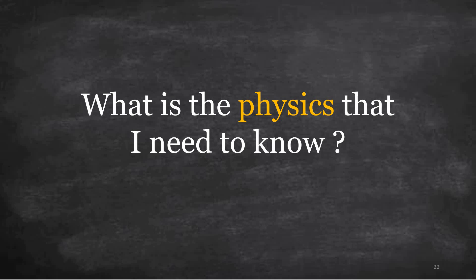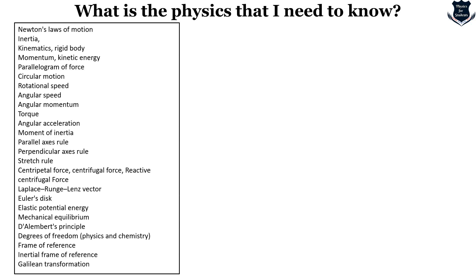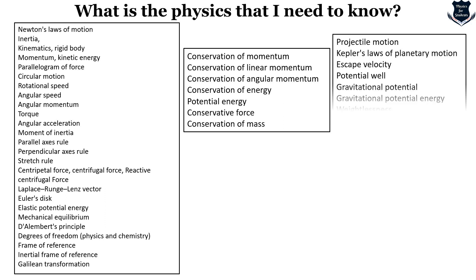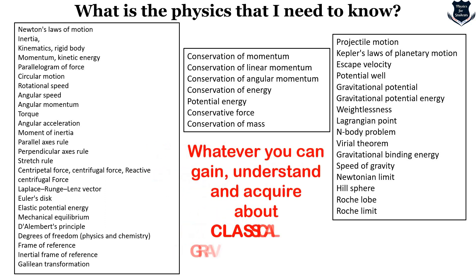So what is the physics that I need to know? It is a huge list. All about Newtonian mechanics: inertia, circular motion, rotational speed, angular speed, angular momentum, torque, D'Alembert's principle, frames of reference, conservation of momentum, linear momentum, conservation of energy, projectile motion, escape velocity, gravitational potential energy, n-body theorem, Lagrangian points, and more. To summarize: whatever you can understand and acquire about classical gravity — anything and everything about classical gravity — do not confuse it with quantum gravity or modern curvature tensors. Classical gravity is an absolute essential before you take the first step in understanding General Relativity.